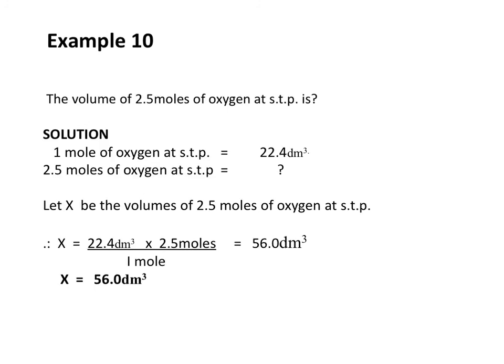Example 10. The volume of 2.5 moles of oxygen at STP. One mole of oxygen at STP is 22.4 dm³. 2.5 moles of oxygen at STP will be X, where X equals 22.4 dm³ times 2.5 moles all over 1 mole. The mole units cancel, giving X equal to 56.0 dm³. So the volume of 2.5 moles of oxygen at STP is 56.0 dm³.